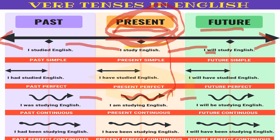Present perfect: the third form of 'study' is also 'studied.' So: 'I have studied English.' Past perfect: 'I had studied English' — 'had' is used for both singular and plural. Future perfect: 'I will have studied English.' Present perfect continuous: 'I have been studying English.' Past perfect continuous: 'I had been studying' — 'been' is necessary here, plus ing. Future perfect continuous: 'I will have been studying English.'